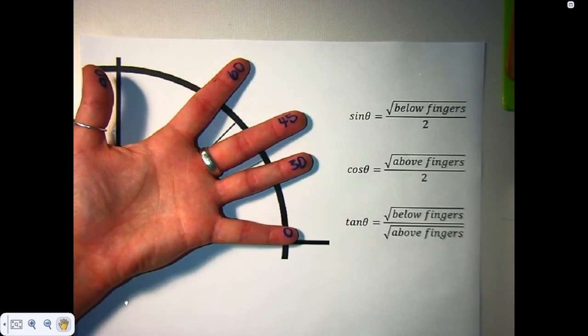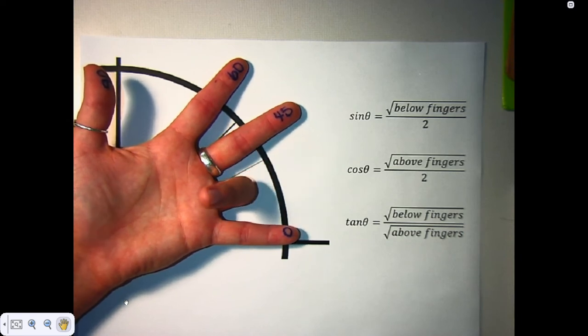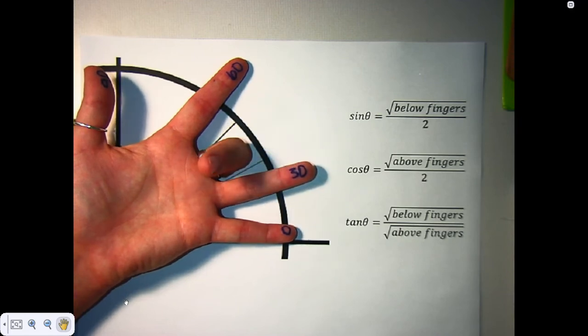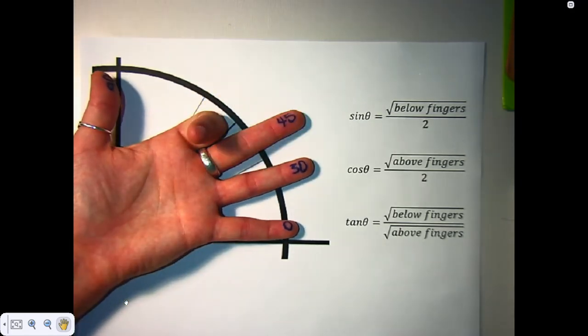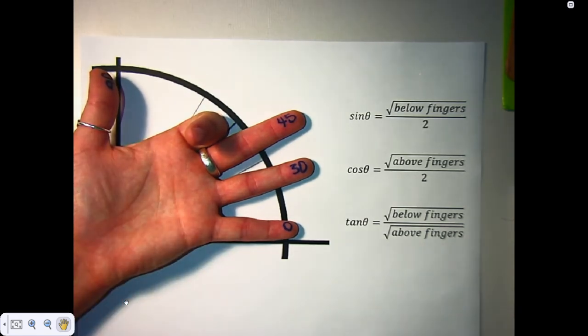For cosine, same concept except now it's the above fingers. 30, there's three fingers above, so square root of 3 over 2. Cosine of 45, square root of 2 over 2. Cosine of 60, square root of 1 over 2, which is just 1 over 2.